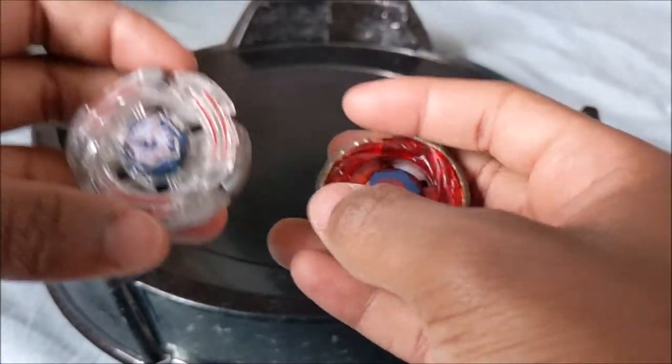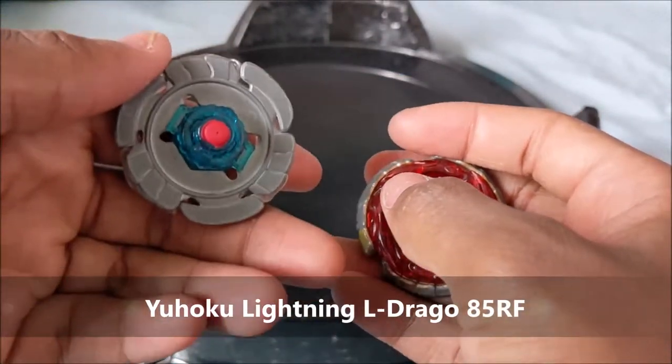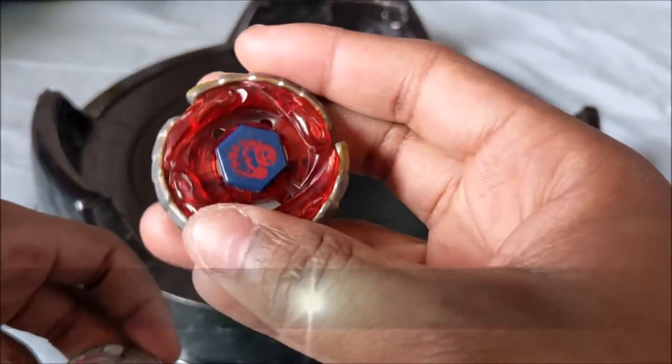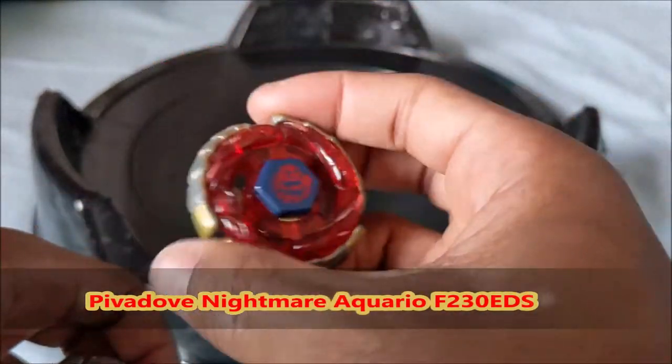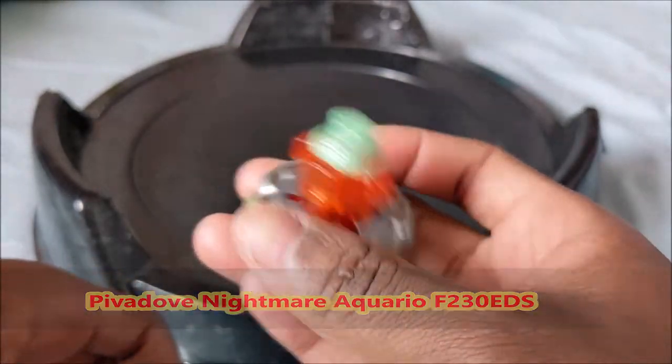Hello Blazers, welcome to this video. Today we have Yuhoku with Lightning Eldrago 85RF against Piwadoe with Nightmare Aquario, because Cygnus was taken, F230 EDS.